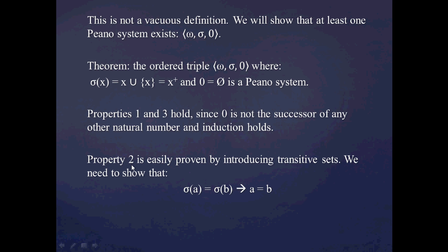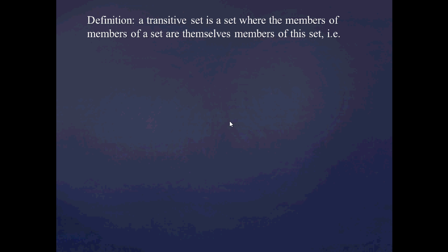And property 2 is going to lead us into the notion of transitive sets. Since once we introduce the notion of a transitive set, we can easily show that the successor function sigma is injective. Remember that what we're going to have to show is that sigma(a) = sigma(b) implies a = b, just like you would show for any injective function. This requirement to prove this is going to lead us into transitive sets.